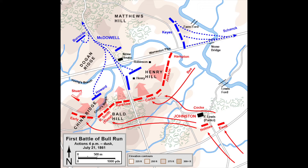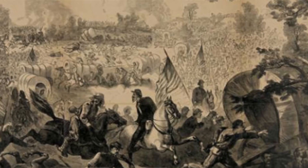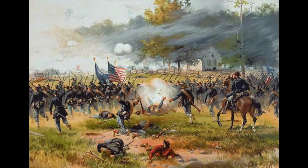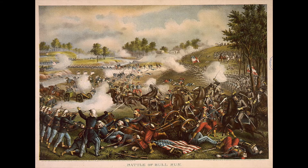Fun fact about this battle: the people in Washington DC actually came out to watch the battle and picnicked near the battlefield — they wanted to watch it take place. As the Union Army retreated, the people watching also had to flee because the armies were advancing towards them. As a result, they congested the bridges and roads the Union Army needed to exit the battle. So there were no more people watching the battles after this.